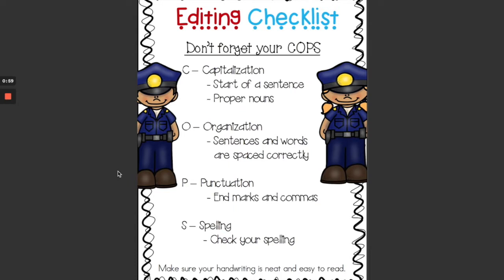The C stands for capitalization. You need to check and see: do all of your sentence starts have a capital letter, and do proper nouns have a capital letter? A proper noun is the specific name of something. So if you were talking about the restaurant McDonald's, that would have a capital M, because it's a proper noun — not just a restaurant, but a specific restaurant, McDonald's.